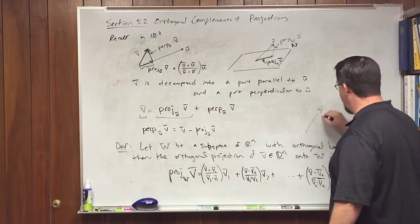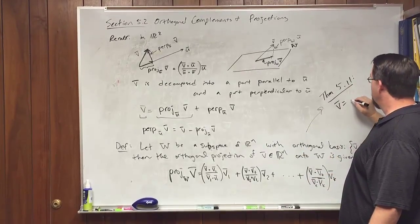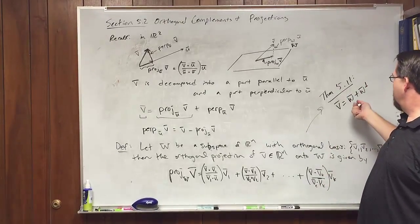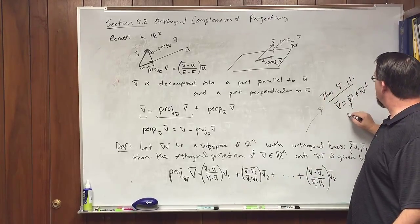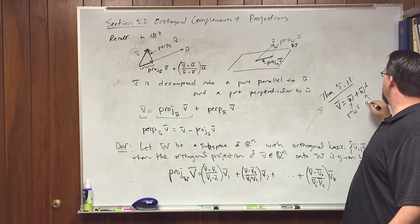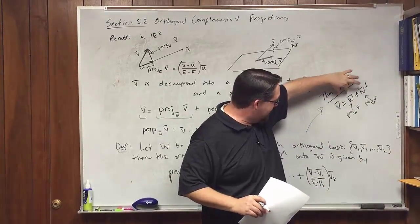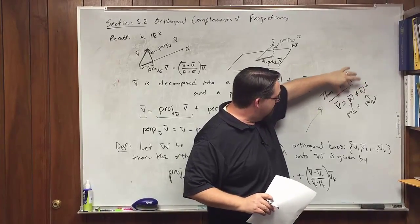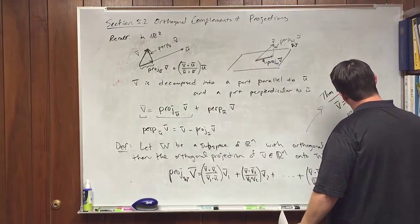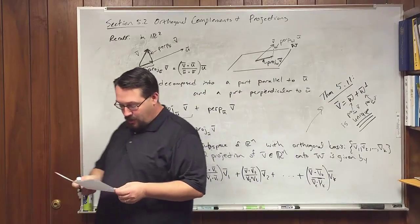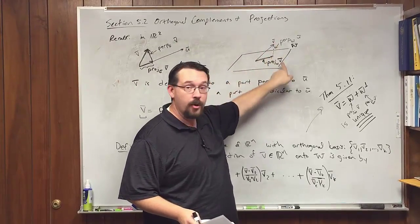One last point: the decomposition is unique. Theorem 5.11 states that V decomposes into W plus W⊥ — that is, the projection of V onto W plus the perpendicular component of V onto W. There is one and only one way to write V in this form: when you project it straight down, there's a unique projection and a unique perpendicular component.